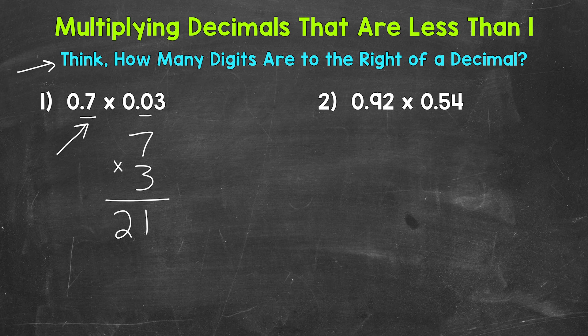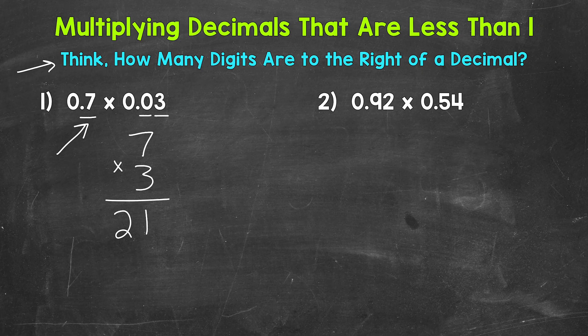Well, 1, 2, 3. 3 digits to the right of a decimal. So our answer needs 3 digits to the right of the decimal. So 1, 2, 3.